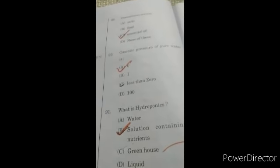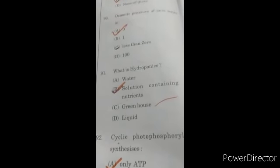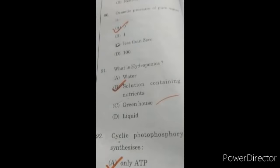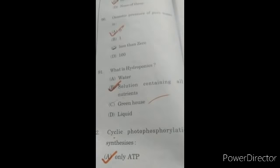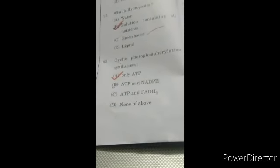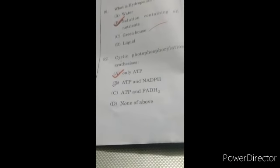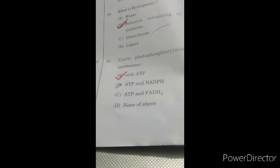Question 89: osmophores secrete C, essential oils. Osmotic pressure of pure water is 0, A option. What is hydroponics? B, solution containing all nutrients. Question 92: cyclic phosphorylation, A option, only ATP.